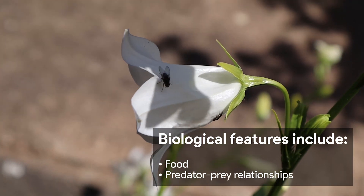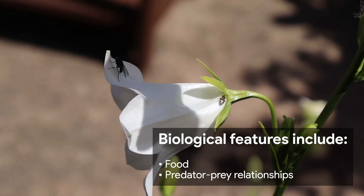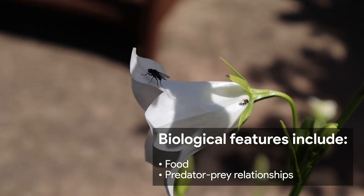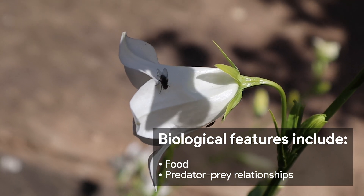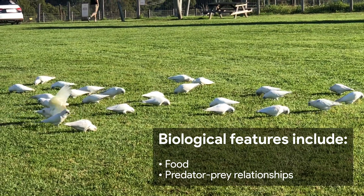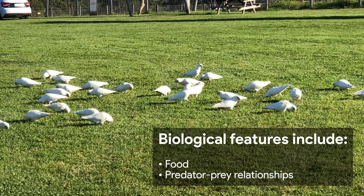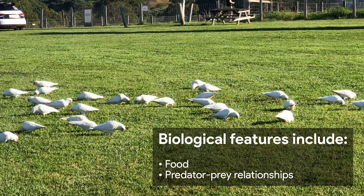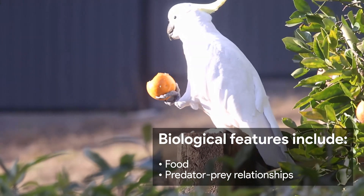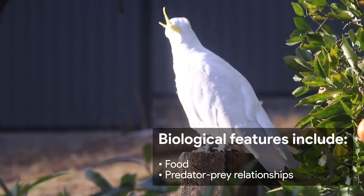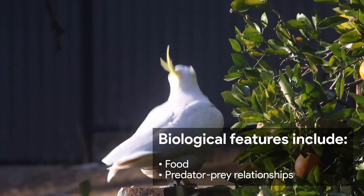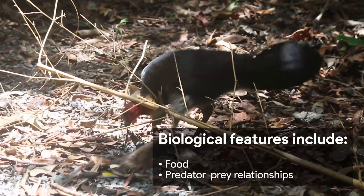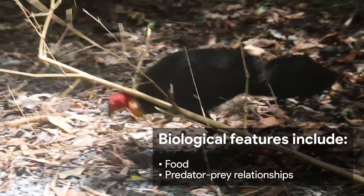Biological features include food and predator-prey relationships. Some habitats have readily available food or high numbers of producers. Others may have food scarcity. This influences species population in the habitat and can also affect behaviour and diet. Food scarcity can cause changes in diet over time, and stresses can also affect genetic diversity.